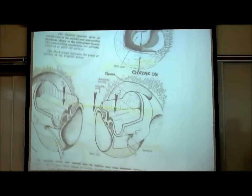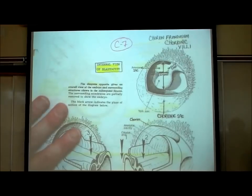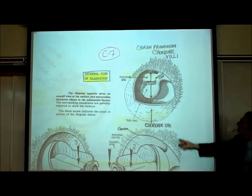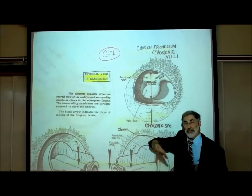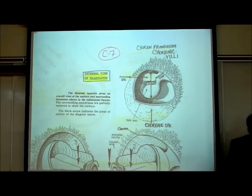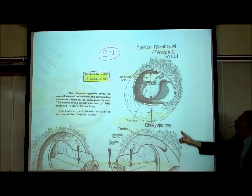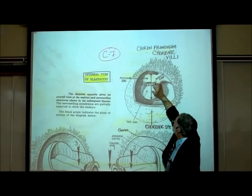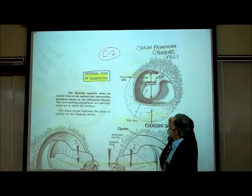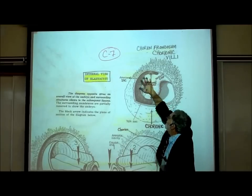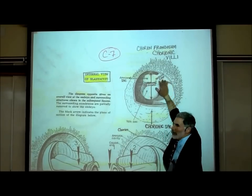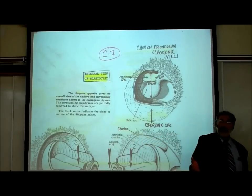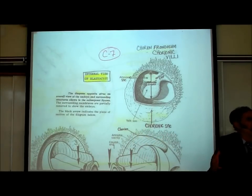On page C7, this shows the blastocyst again. By this point it must be the second week because we're starting to see chorionic villi grow — that starts to happen during the second week. This is the inner cell mass, but the cells are already starting to change and specialize. Some are becoming the amniotic sac, some are becoming the yolk sac, some are becoming the umbilical cord.